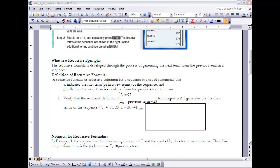(a) indicates the first term or first few terms of sequence, and (b) tells how the next term is calculated from the previous term or terms. So there's always at least two statements within a recursive formula or recursive definition.